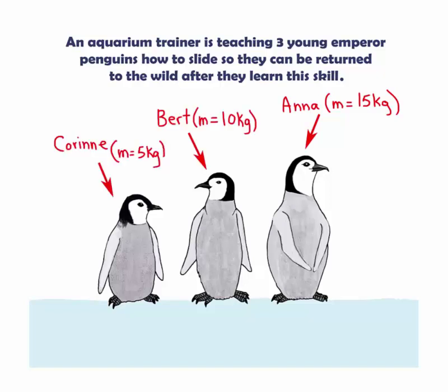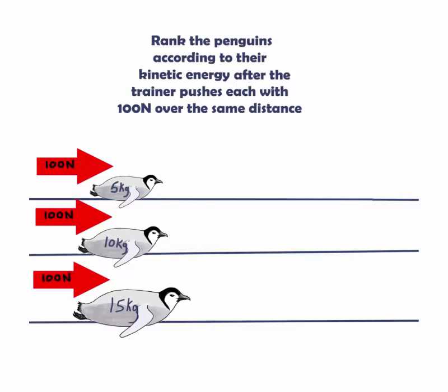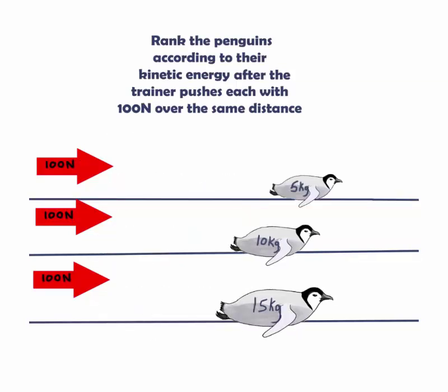They are initially at rest and the trainer pushes them each with a force of 100 newtons. First, let's rank the penguins according to their kinetic energy after the trainer pushes each with 100 newtons over the same distance.